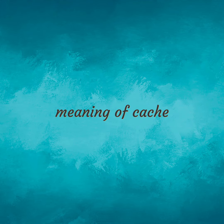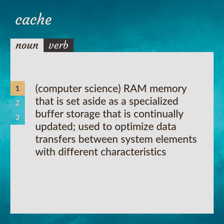Meaning of Cache. Computer Science: RAM memory that is set aside as a specialized buffer storage that is continually updated, used to optimize data transfers between system elements with different characteristics.